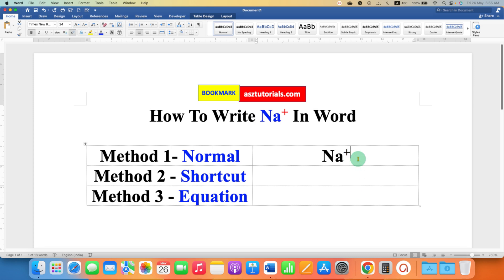And if you want to frequently type Na plus, then you can just type Na and plus. Select the plus using your keyboard and use the shortcut Ctrl Shift equal to on your keyboard to get plus as a superscript.